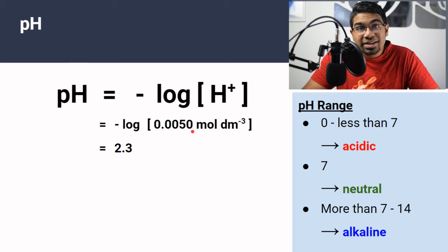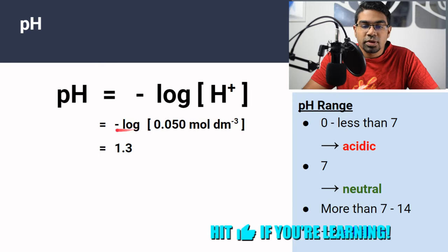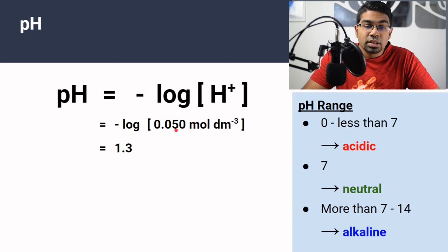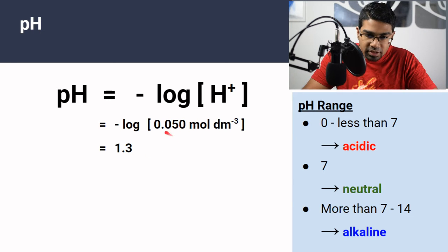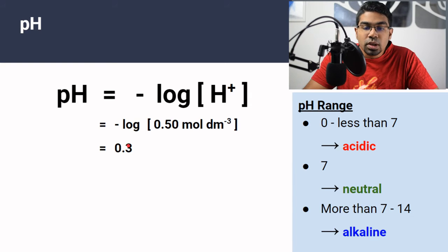Now what happens when we increase the concentration of hydrogen ions? If the concentration is 10 times more — so 0.05 mol/dm³ — then minus log 0.05 gives us a pH of 1.3. You can see that when we increase the concentration of hydrogen ions, the pH becomes lower. Let's increase it 10 times more: 0.5 mol/dm³ — minus log 0.5 gives us 0.3. So the higher the concentration of hydrogen ions, the lower the pH.